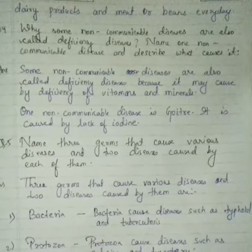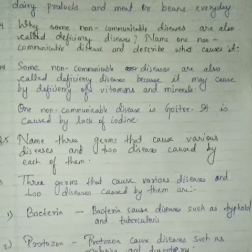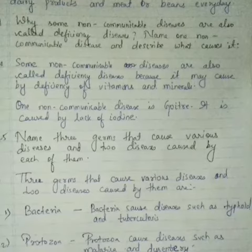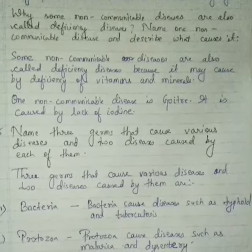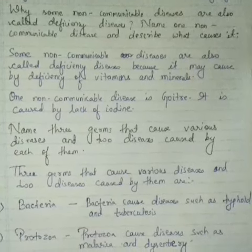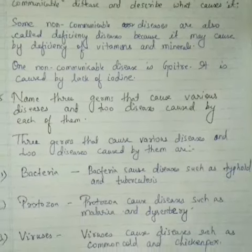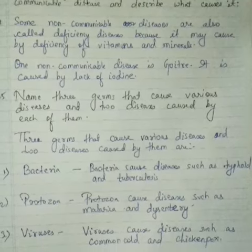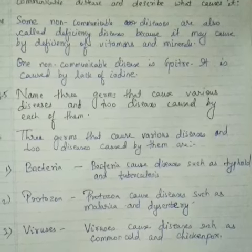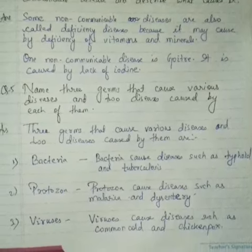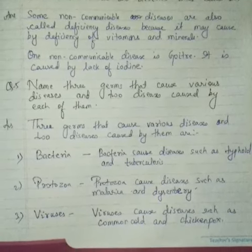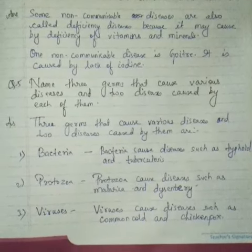Question four: Why are some non-communicable diseases also called deficiency diseases? Name one non-communicable disease and describe what causes it. Some non-communicable diseases are also called deficiency diseases because they may be caused by the deficiency of vitamins and minerals. One non-communicable disease is goitre. It is caused by lack of iodine.